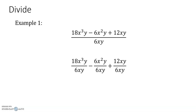So: 18x cubed y divided by 6xy, minus 6x squared y divided by 6xy, plus 12xy divided by 6xy. 18 divided by 6 is 3; x cubed divided by x is x squared; y divided by y is 1. Minus 6x squared y divided by 6xy gives x. Plus 12xy divided by 6xy gives 2. The answer is 3x squared minus x plus 2. Each term of the trinomial was divided by the monomial.